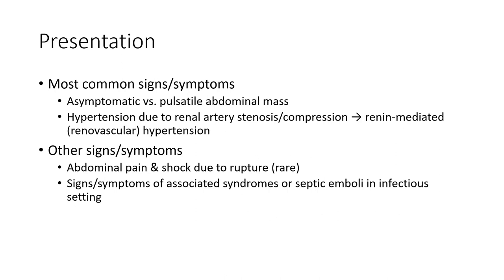Most common signs and symptoms include hypertension, abdominal mass, hypotension due to renal arterious compression, leading to increased renal-mediated renovascular hypertension. Other signs and symptoms include abdominal pain and shock due to rupture, symptoms of associated syndrome, or septic emboli.